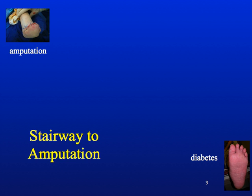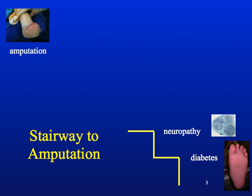The first step is obviously having the diagnosis of diabetes. Approximately 8 to 12 years after the diagnosis of diabetes, patients may develop peripheral sensory neuropathy, leading to a decreased or absent sensation in their feet, which predisposes them to injury, and they can get a foot ulceration.